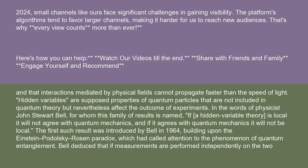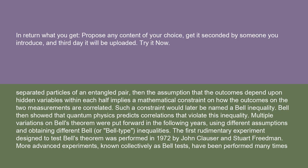The first such result was introduced by Bell in 1964, building upon the Einstein-Podolsky-Rosen paradox, which had called attention to the phenomenon of quantum entanglement. Bell deduced that if measurements are performed independently on the two separated particles of an entangled pair, then the assumption that the outcomes depend upon hidden variables within each half implies a mathematical constraint on how the outcomes on the two measurements are correlated. Such a constraint would later be named a Bell inequality.